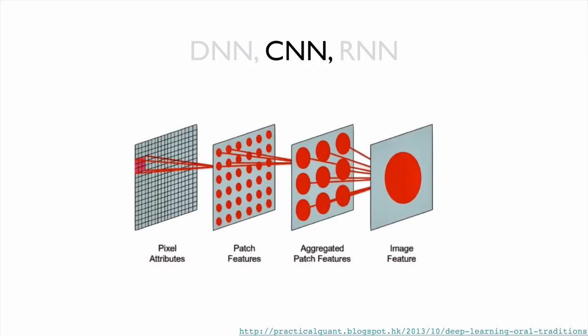CNN is slightly different. For a given input, instead of using all of them together, it's just focusing on certain areas, so that it automatically extracts the features and moves on to the next layers. It's especially very effective for image inputs.